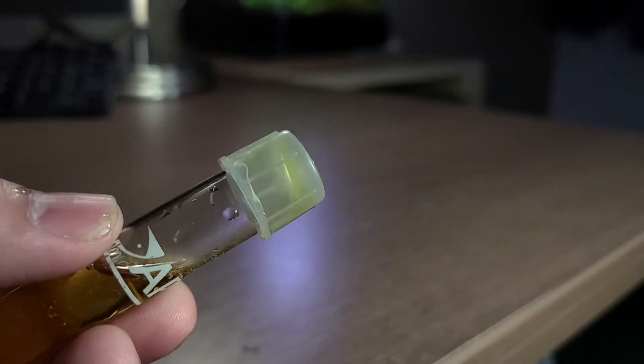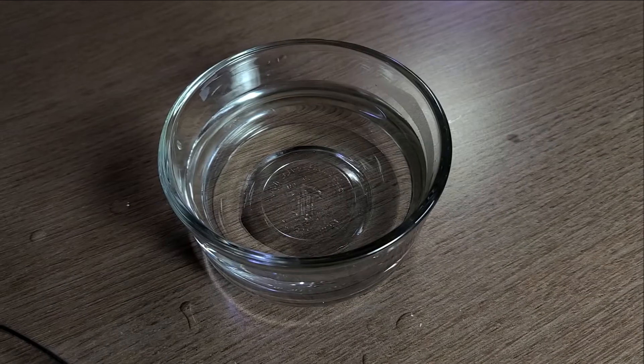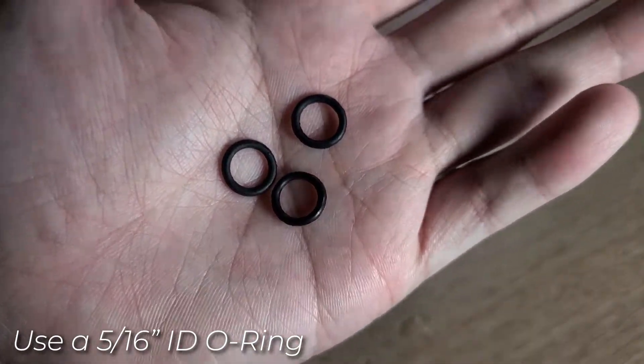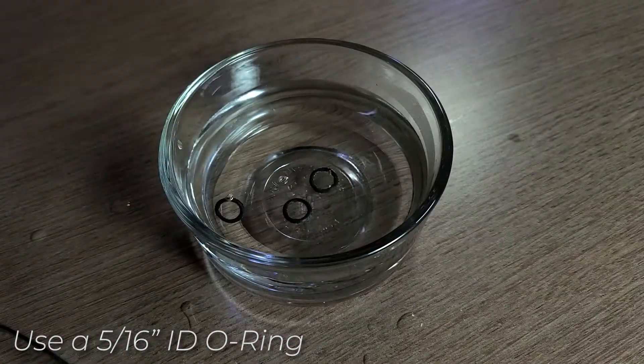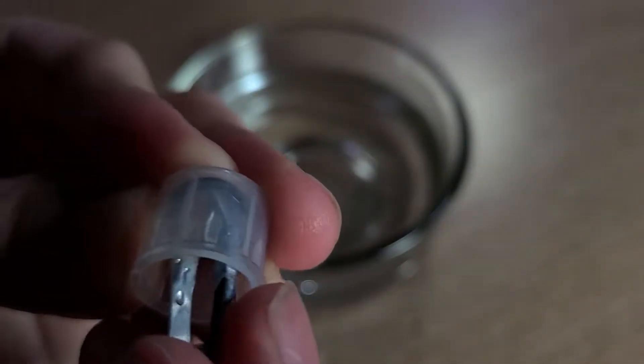But oh no, the test tube is leaking. What can I do? Here's a quick tip. You can heat up an O-ring with a 5/16th inner diameter in hot water, and then add it to the cap as shown.